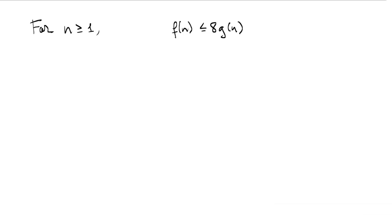The inequality that we're trying to prove is that for any n greater than or equal to 1, f(n) is less than or equal to 8 times g(n). Plugging in the expressions for the functions f and g, the inequality we want to show is that 3n³ + 5n² - 7 is less than or equal to 8n³.